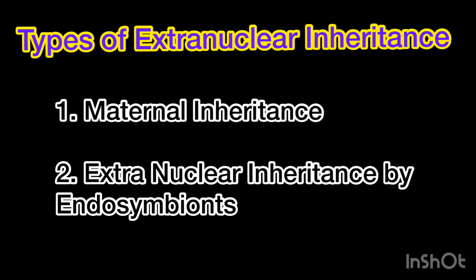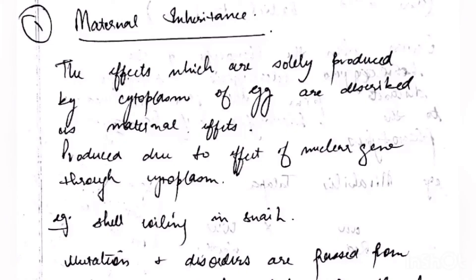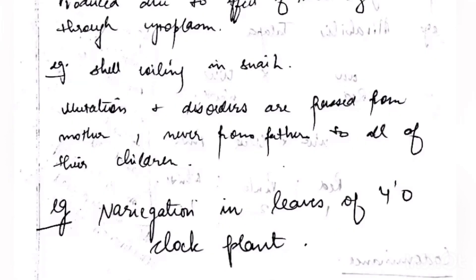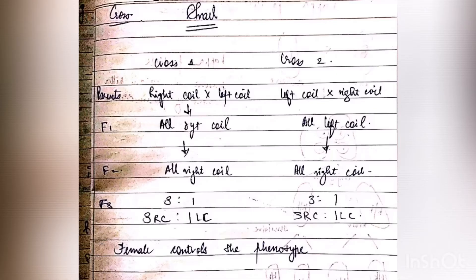Now we will study the types of extra nuclear inheritance — maternal inheritance and extra nuclear inheritance. Maternal inheritance means that the DNA contained in mitochondria or chloroplast determines the phenotype of the offspring, and mutations or disorders are passed from the mother, never from the father, to their children. Examples include shell coiling in snails and variegation in leaves of the four o'clock plant, Mirabilis jalapa.